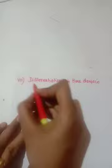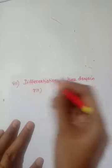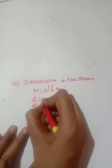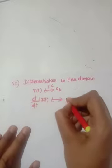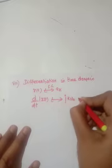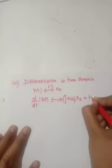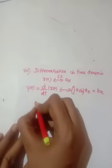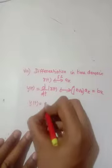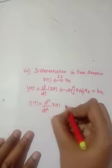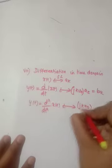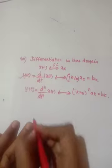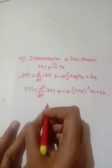The next property is differentiation in time domain. Here x(t) has Fourier series coefficient ak. We perform differentiation: d/dt of x(t). What we get is jkω₀ · ak, which we call bk, assigning d/dt[x(t)] as y(t). In general, the nth derivative d^n/dt^n of x(t) has Fourier series coefficient (jkω₀)^n · ak = bk.